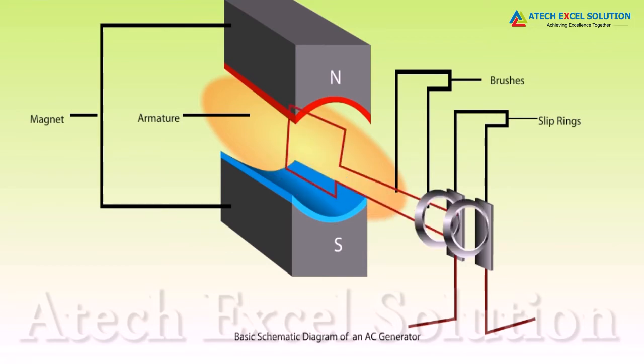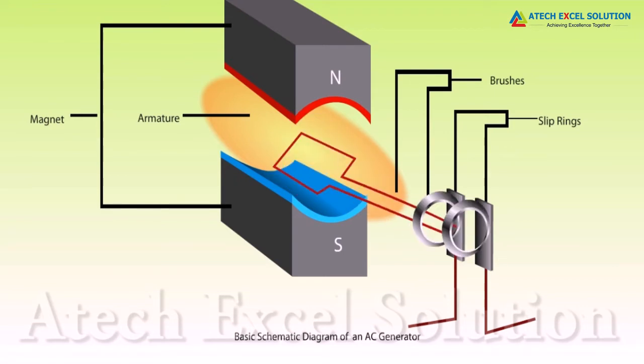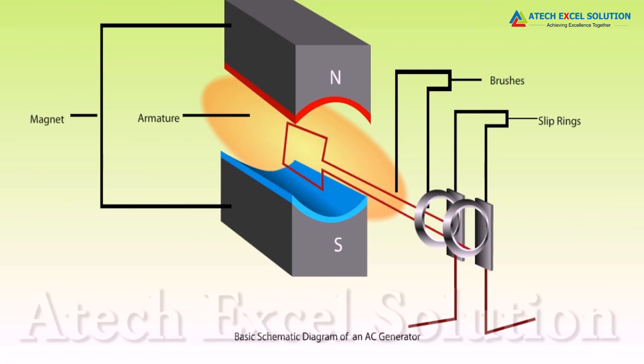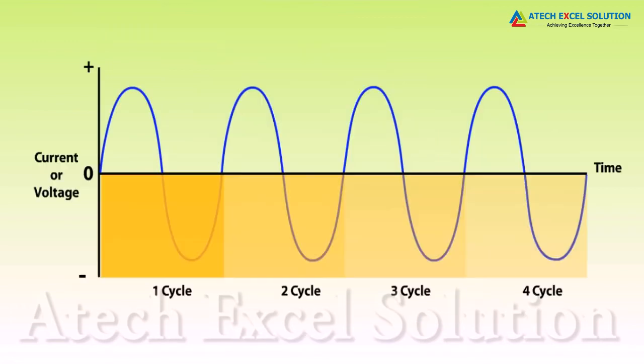When coil ABCD is rotated clockwise, then by Fleming's right-hand rule the induced currents are set up along the direction ABCD. This means that the current in external circuit flows from B2 to B1. After half a rotation, current will move in direction DCBA. This means that the current in external circuit flows from B1 to B2.